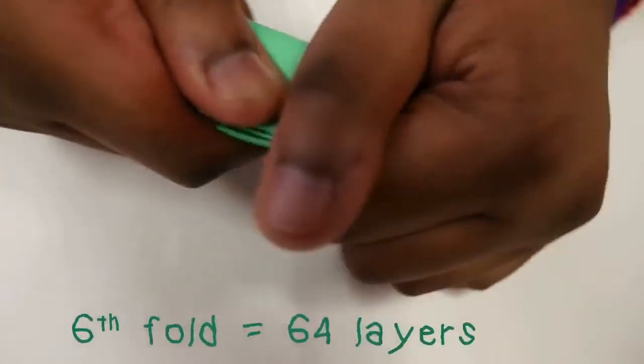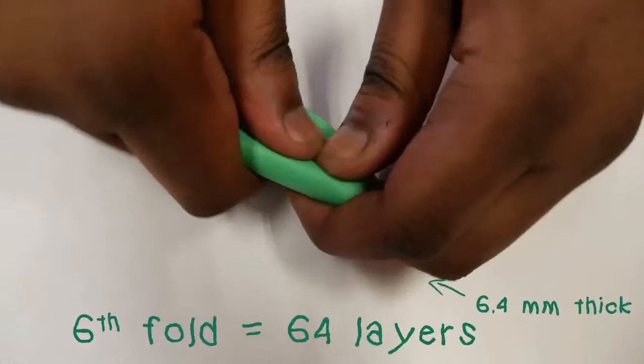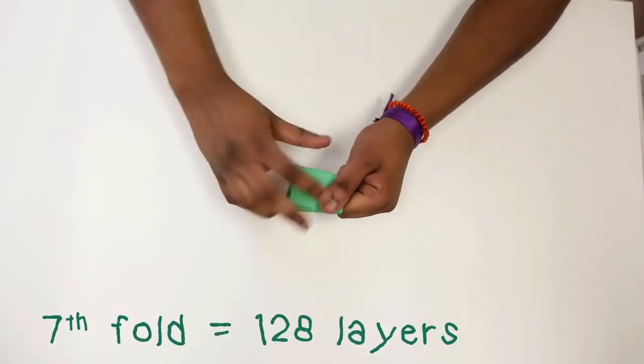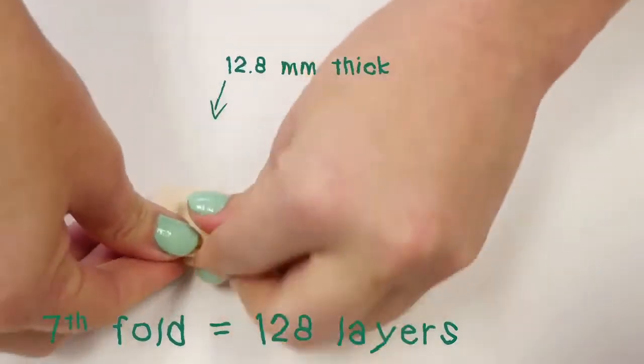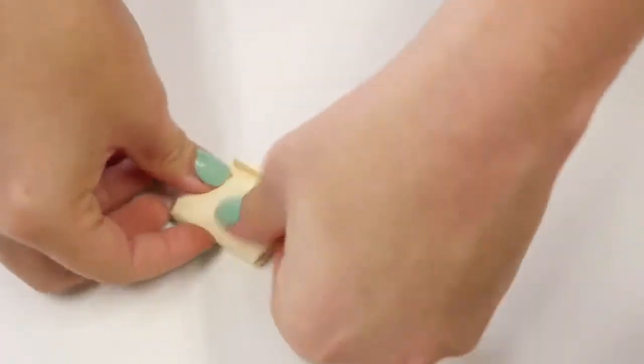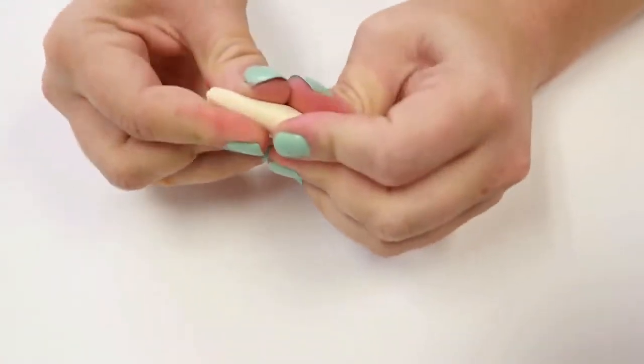The sixth fold: 64 layers with a thickness of 6.4 mm. And the seventh fold would have 128 layers with a thickness of 12.8 mm. At this point, most people would not be able to fold the paper for the seventh time.